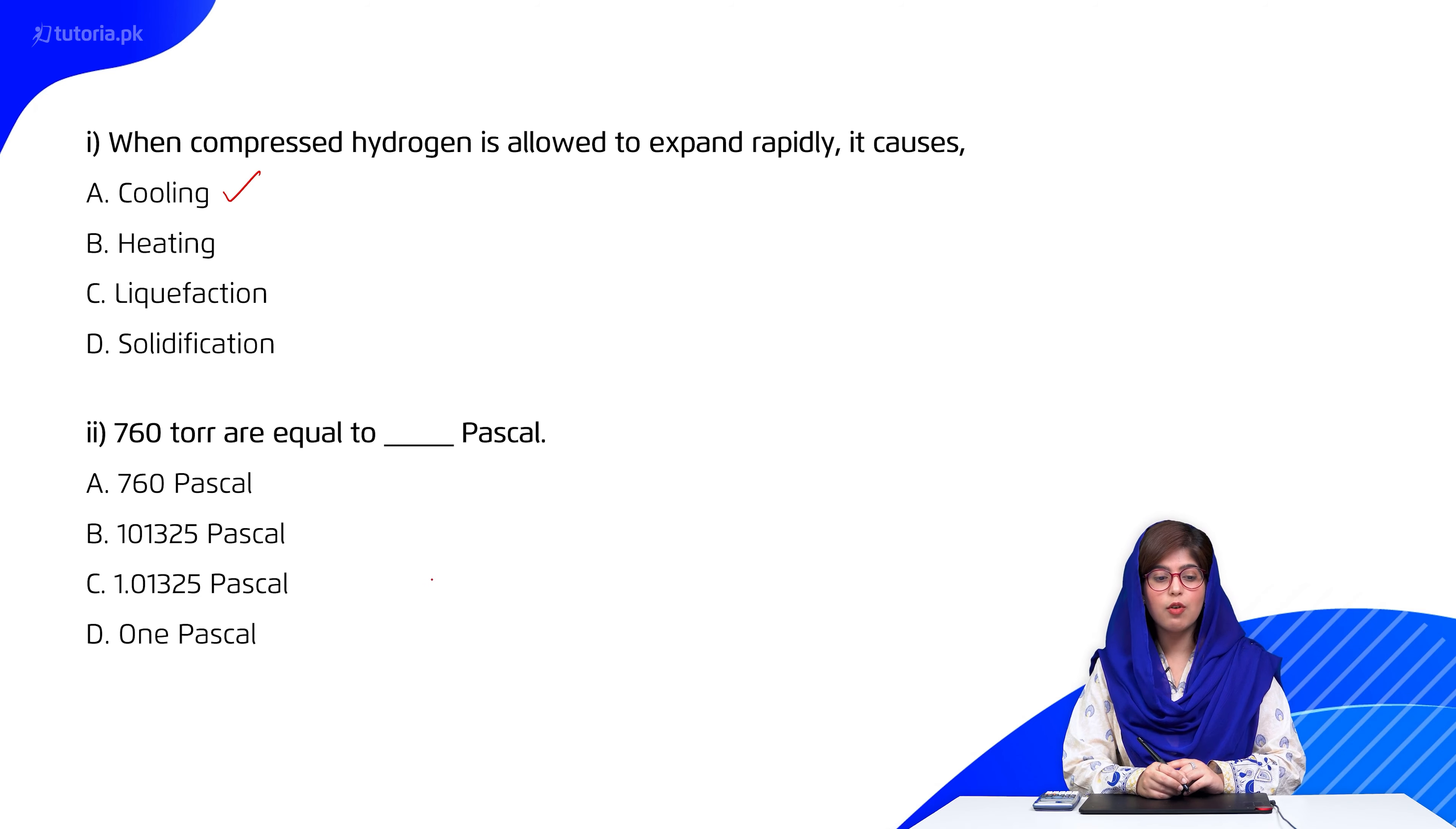Then students, moving forward, number two says 760 torr are equal to dash pascal. 760 pascal this is wrong, 101325 pascal, 1.01325 pascal, this is equal to 1 pascal this is wrong. So option B would be the right one.